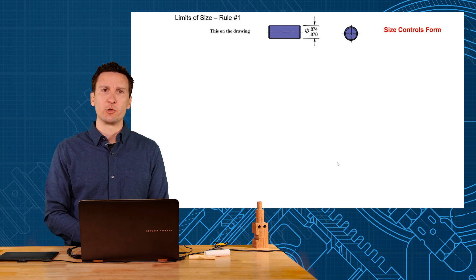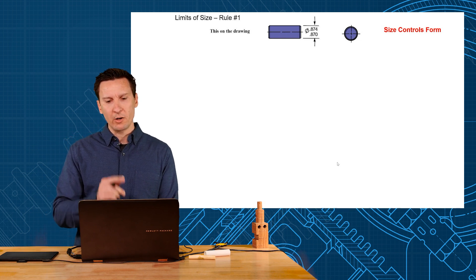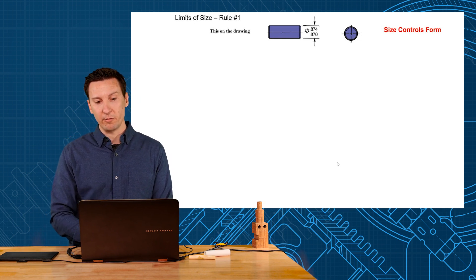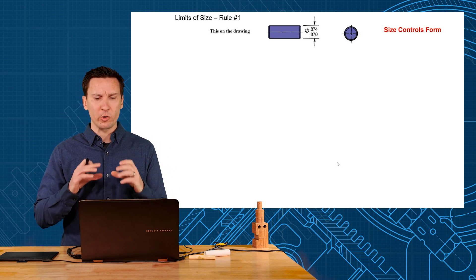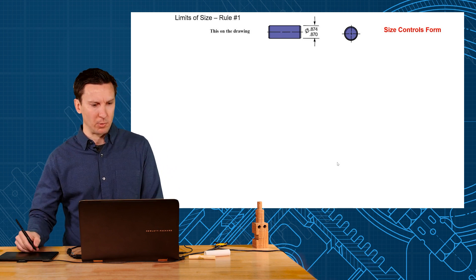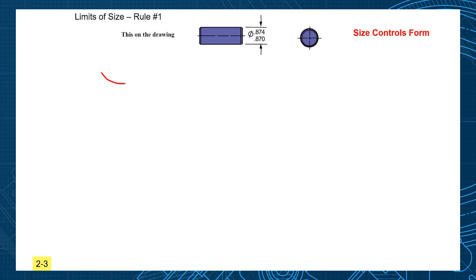Let's go into how size controls form a little bit more. Here I have our pin .870-.874, and I want to know what's the worst case wasted shape the part could go. Wasted shape is where it wastes in - it's like an hourglass shape.